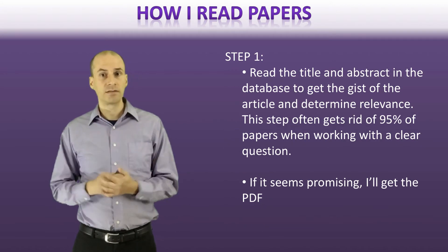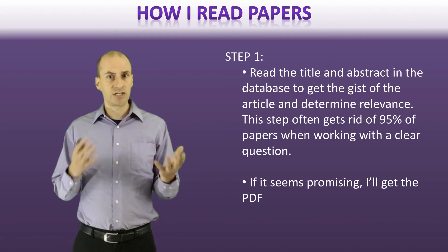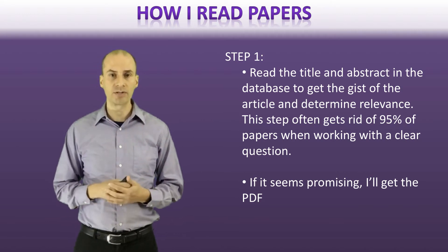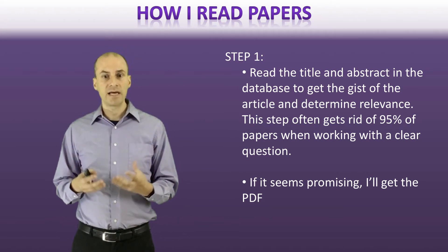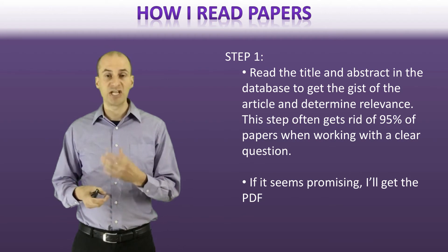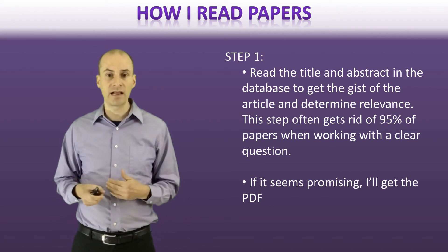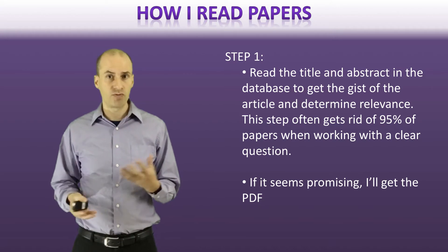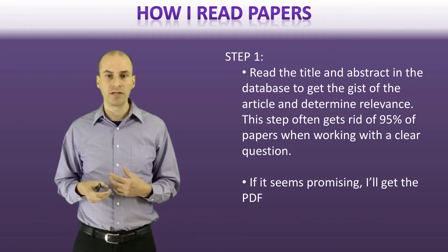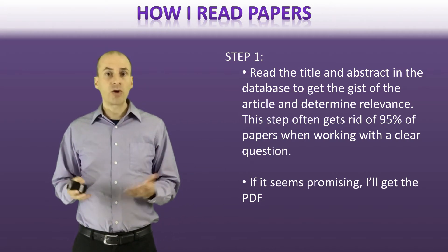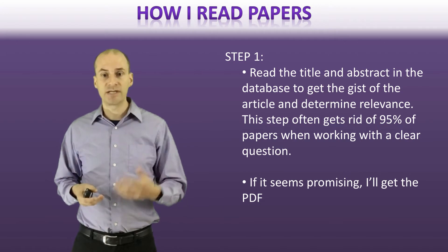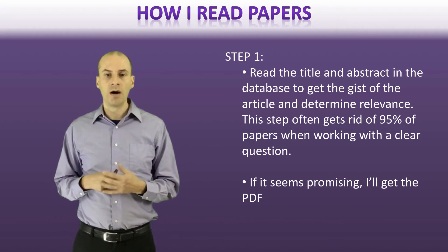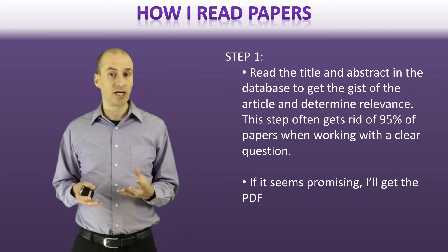This is Strategy One for identifying papers. Step one: I just look at the title and abstract in the database. This gives me a quick sense of whether the paper is relevant to my question. Fairly quickly, I can get rid of about 95% of the papers I view if I'm using a clear question.